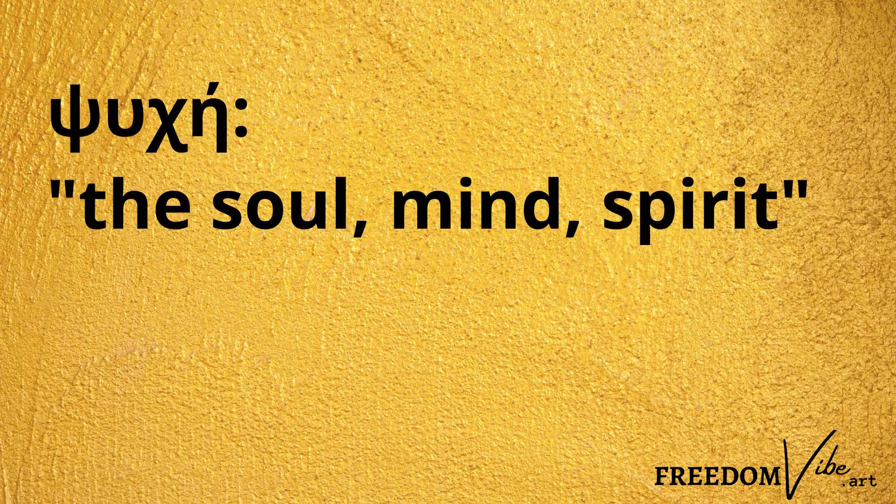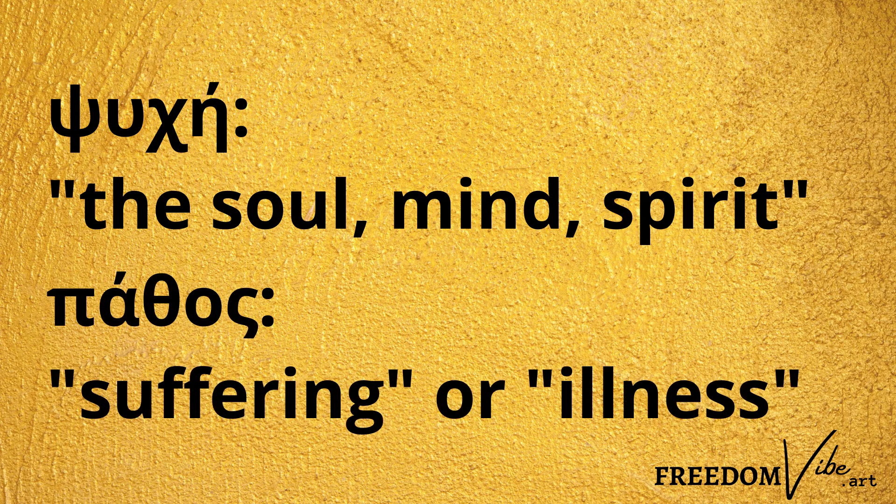Let's look at the etymology of the word psychopath or psychopathy to really understand its meaning on a deeper level. The word comes from two different Greek roots: psyche and pathos. Psyche refers to the mind, and pathos is a condition of suffering or illness. So literally, psychopathy means an illness of the mind or a suffering of the mind.